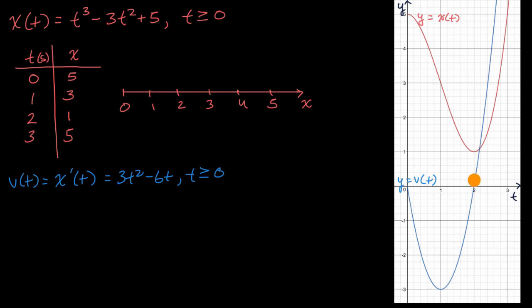And at two seconds, our velocity becomes positive. That makes sense, because at two seconds was when our velocity switched directions to the rightward direction. So our velocity is getting more and more negative, less and less negative, and then we switch directions. And we see it right over here.